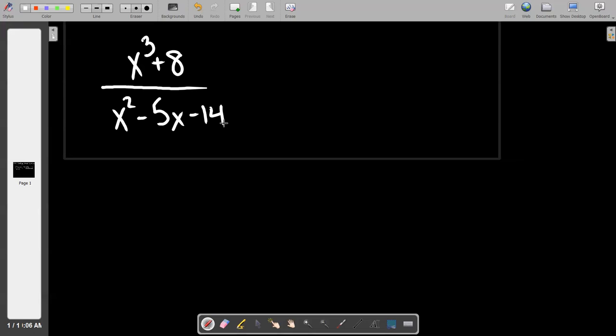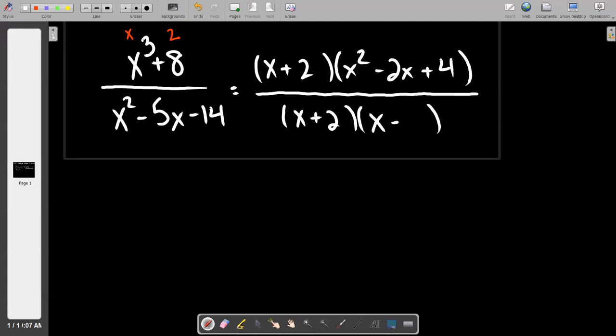Next one. The top one is the sum of cubes whose a value is x and whose b value is 2, so the top one is going to factor into short set, long set. The bottom is just a ho-hum sort of factory thing, just standard. It factors to (x + 2)(x - 7).